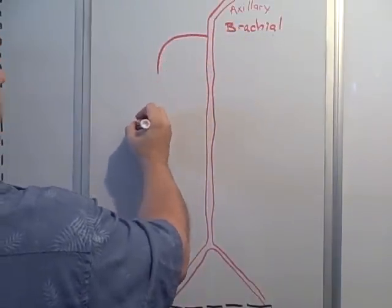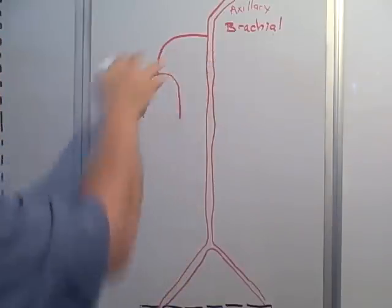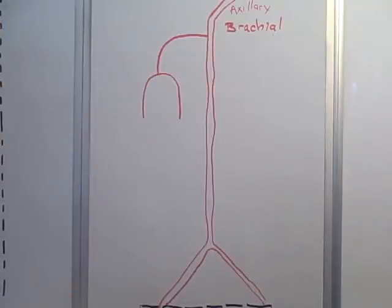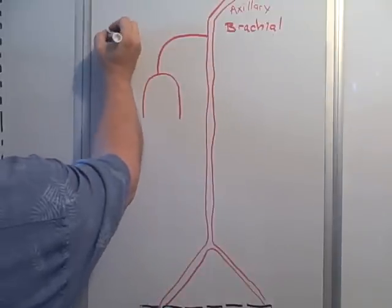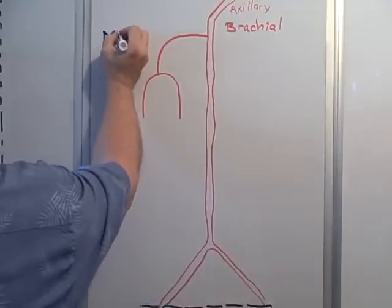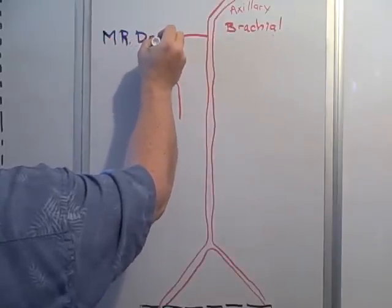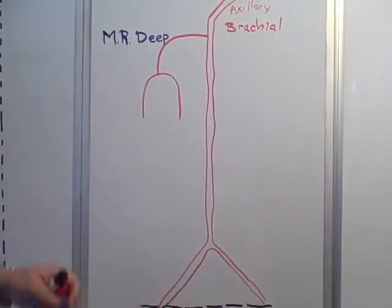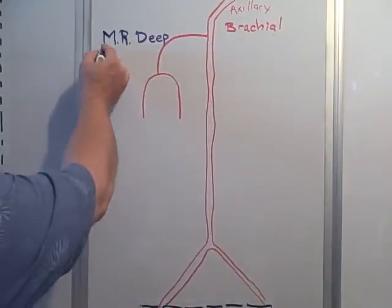Starting kind of simple here — the first one that comes off is the profundus brachii, also known as the deep brachial artery. We're going to call it 'Mr. Deep,' and that kind of sets the tone for the more complicated mnemonic we're going to use to help remember the collateral and recurrent arteries.